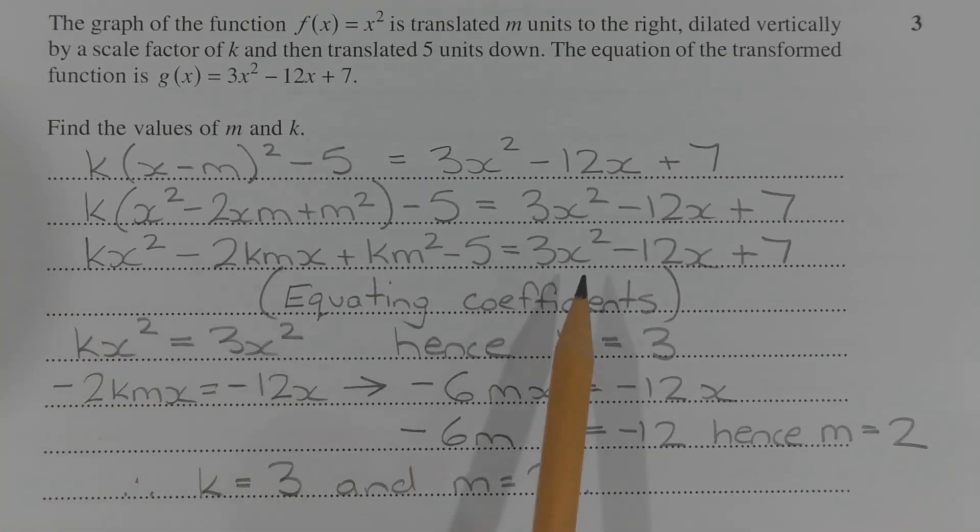we have kx squared is equal to 3x squared, hence k equals 3.